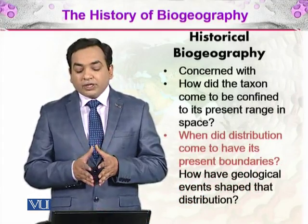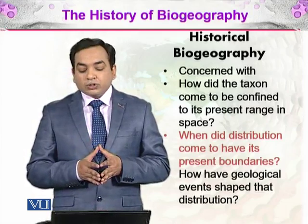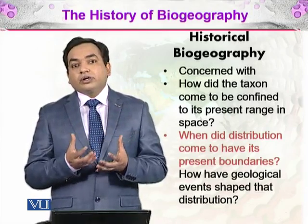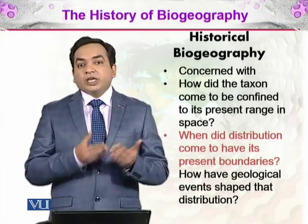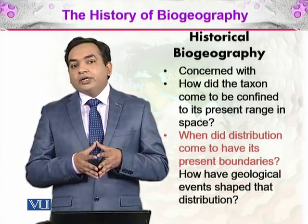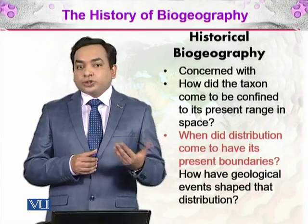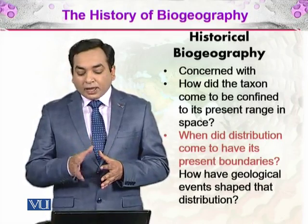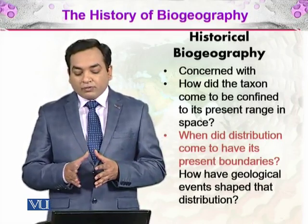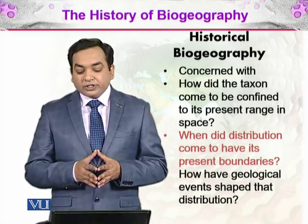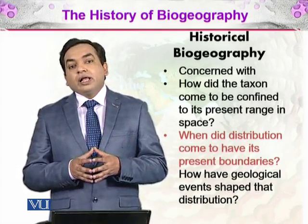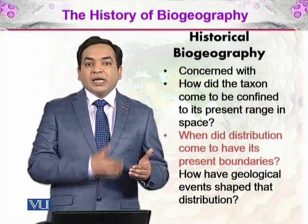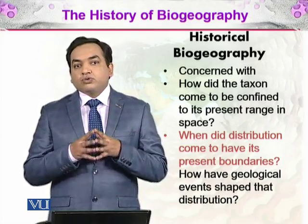Historical biogeography is concerned with how a taxon came to be confined to its present range in space — how a particular group of species came to live in a particular area. Why do kangaroos live in Australia only? It also asks when a distribution came to have its present boundaries — for example, when did Australia become separated from the continents to which it was once attached.